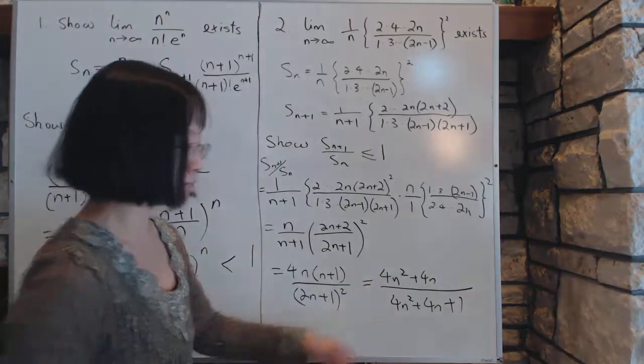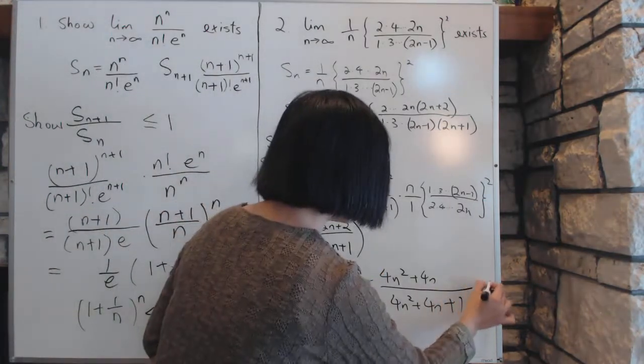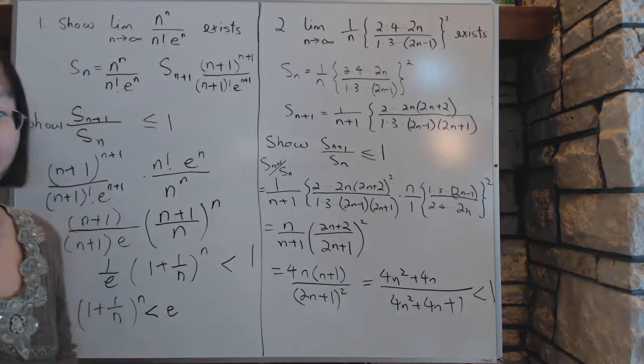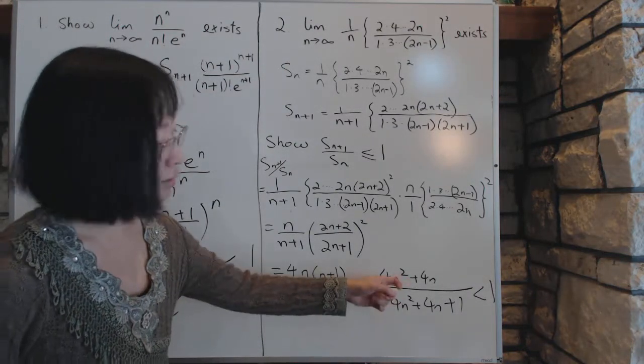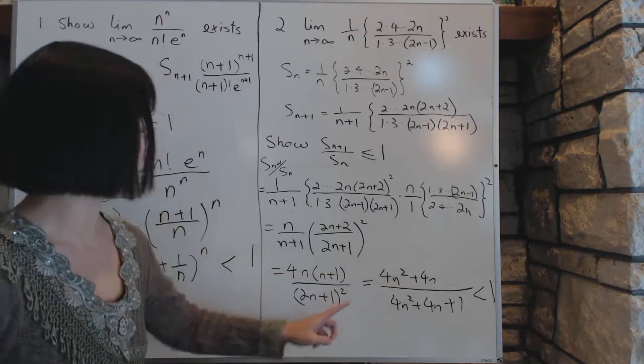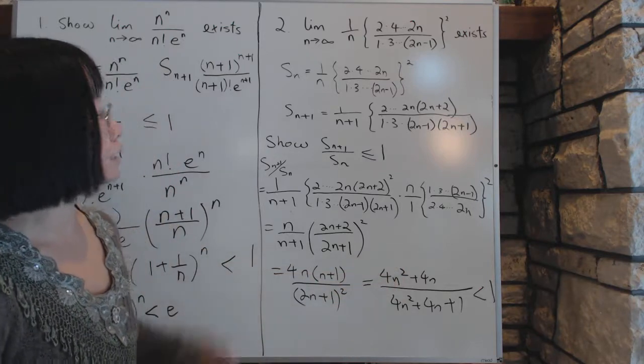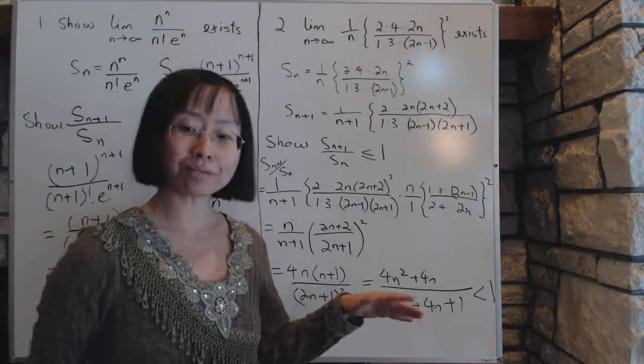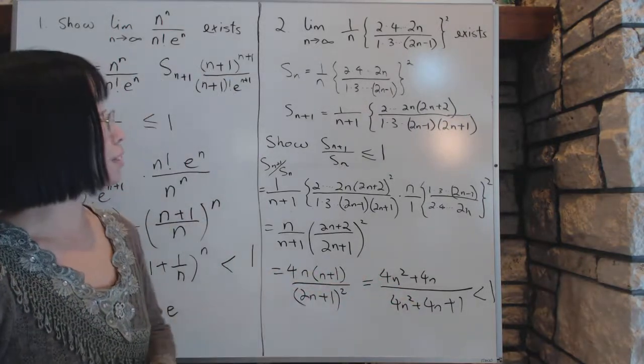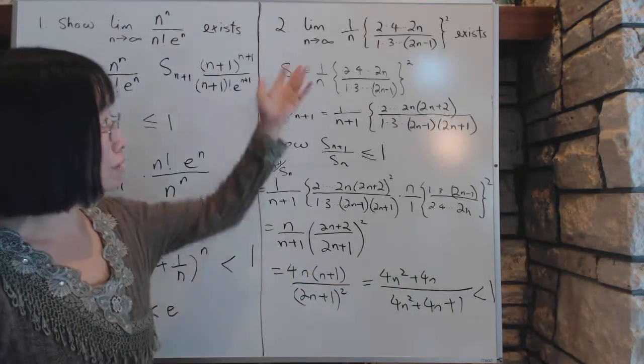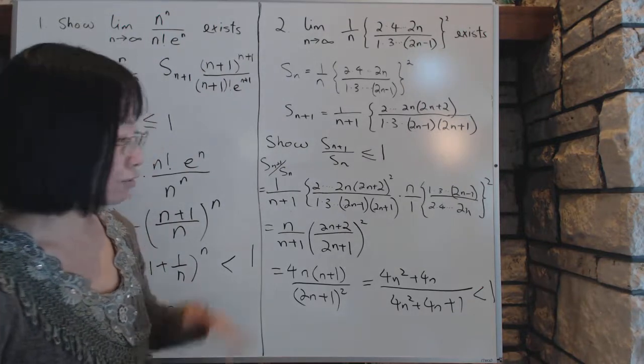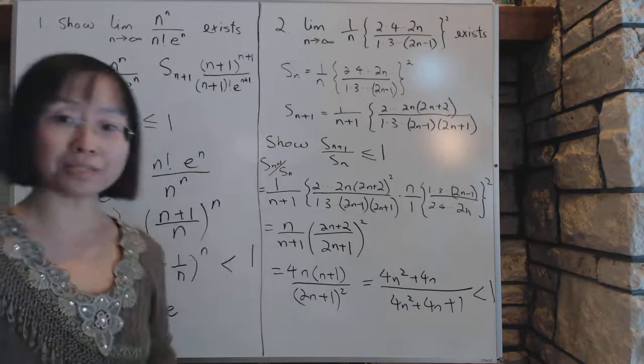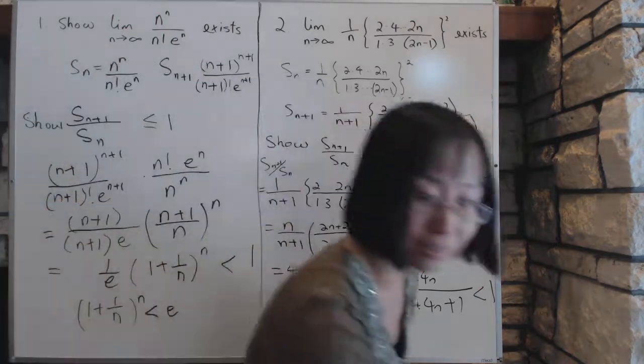So, then, that proves that the sequence is decreasing. And again, because of that, and it's bounded below, because the sequence is a positive sequence, so it's bounded by 0, therefore, it's a convergent sequence, and therefore, the limit exists. And that concludes the story.